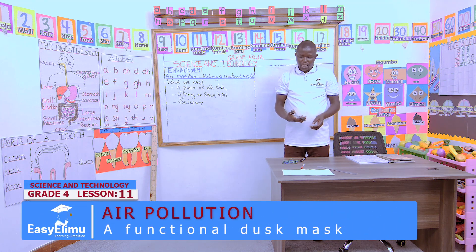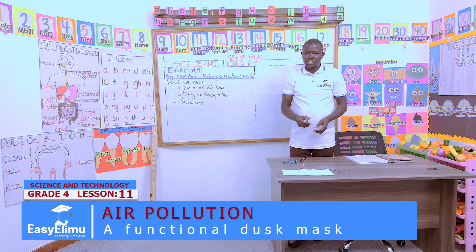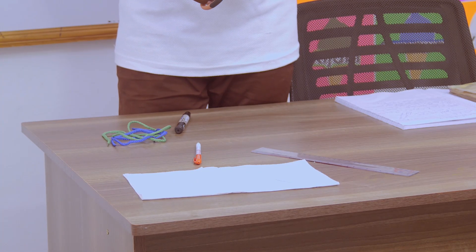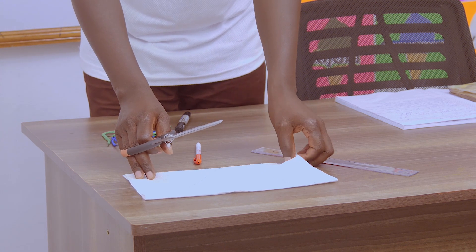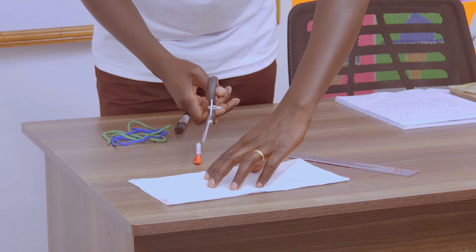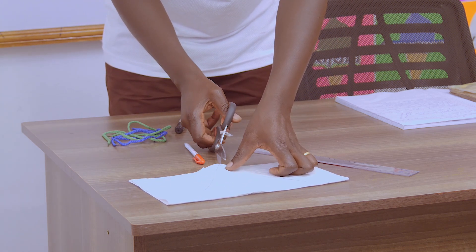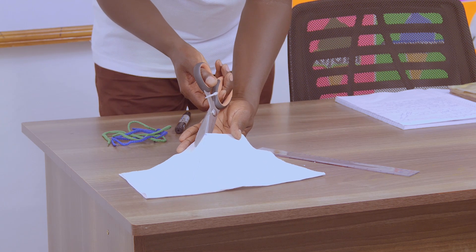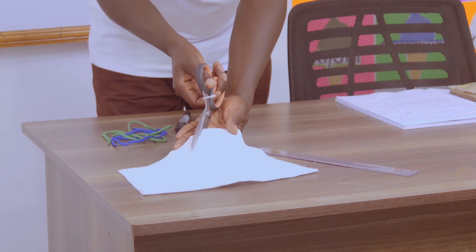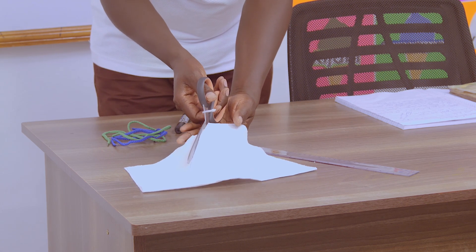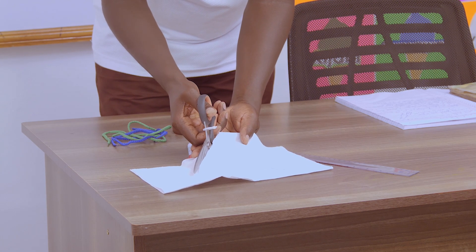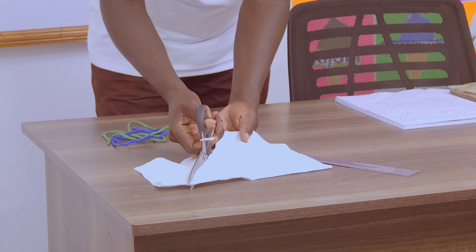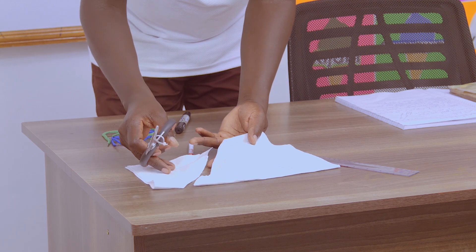Then the next step — take your pair of scissors. Remember, you are working as a group, not individually. Make sure everybody participates. Take your pair of scissors and cut along the lines you have drawn while the material is still folded — do not unfold. Let your friends assist you to hold the material so it does not move.